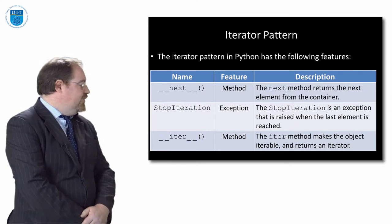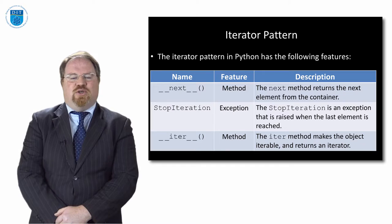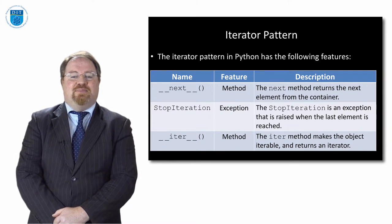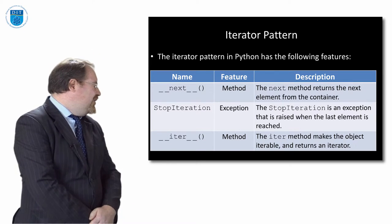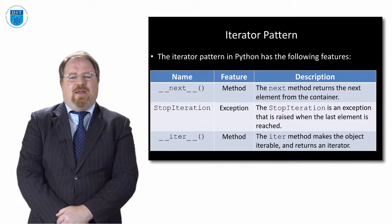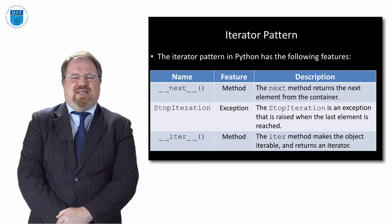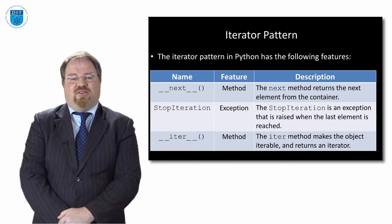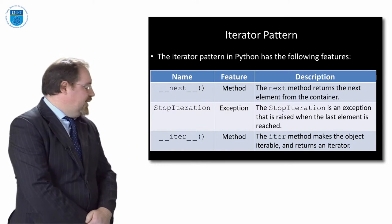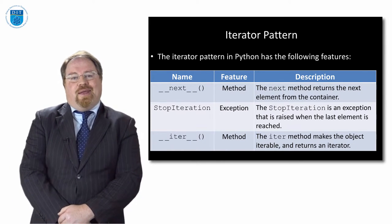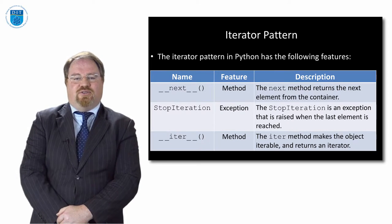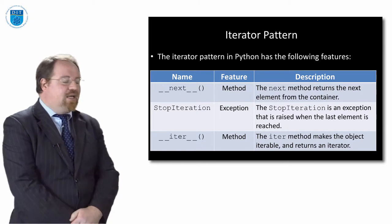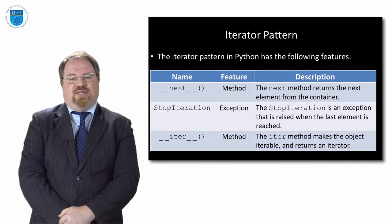In Python we have the equivalent of next and done. Next is called __next__ and it's a method that returns the next element of the list. The done method is an exception called StopIteration. Once StopIteration occurs it means we've reached the end of the list. Python also has an additional built-in method called __iter__ which makes the object iterable, so it makes it possible to visit each element of the list.